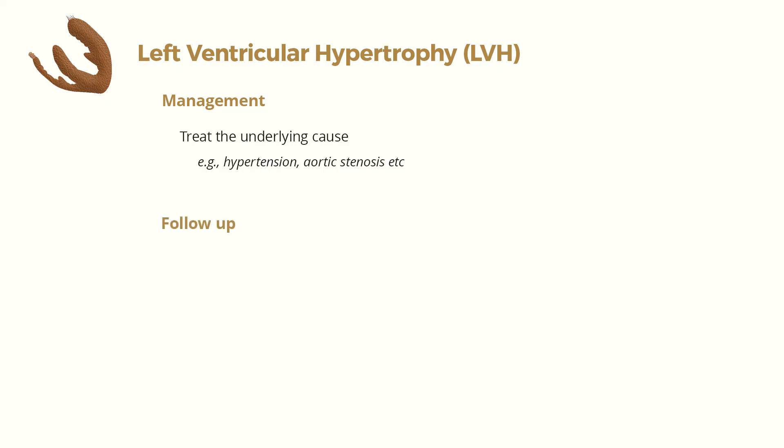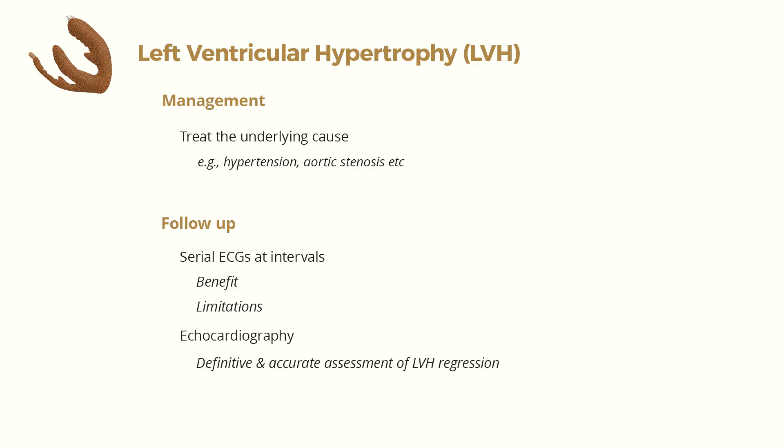How should the patient with LVH be followed up? Serial monitoring of ECG voltage may be helpful. Changes in ECG voltage and repolarization abnormalities over time may reflect changes in LV mass and correlate with cardiovascular risk — for example, regression of LVH may reflect effective antihypertensive therapy. However, loss of LVH voltage criteria may also be due to alterations in lead placement or factors associated with falsely decreased QRS voltage, such as anasarca, pleural or pericardial effusion, weight gain, and increased severity of chronic obstructive pulmonary disease. Clinical correlation in the interpretation of ECG is therefore important. For a definitive assessment of regression of LVH, echocardiography is the most accurate.